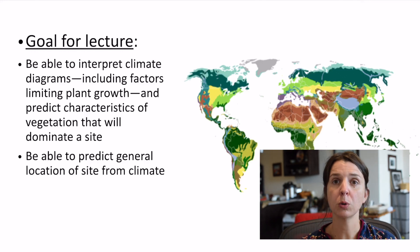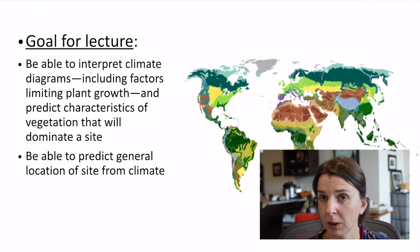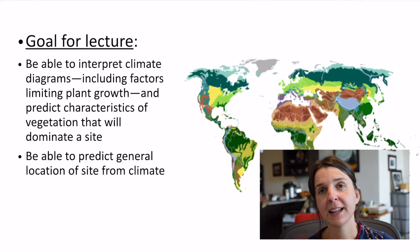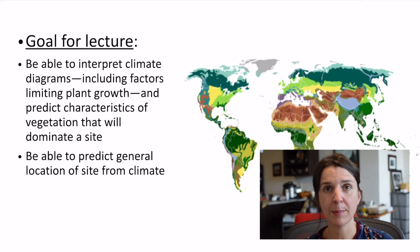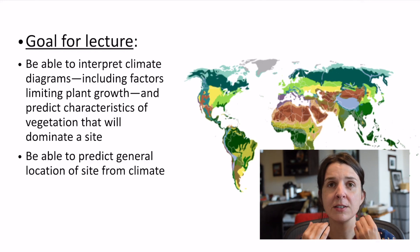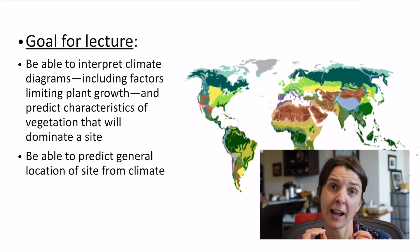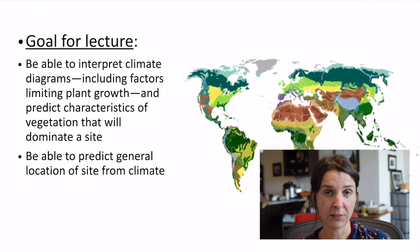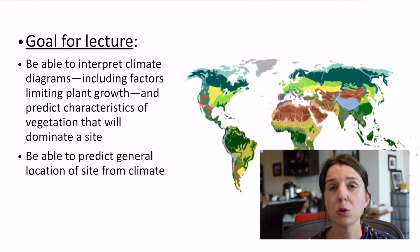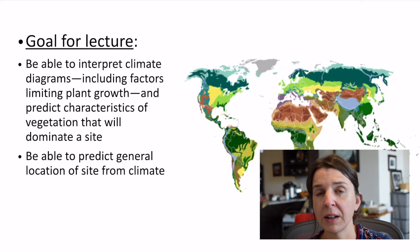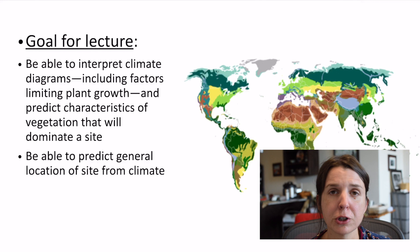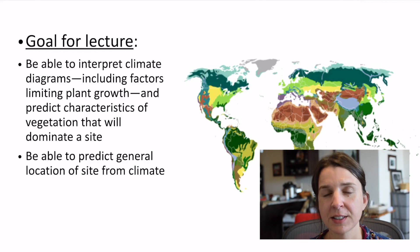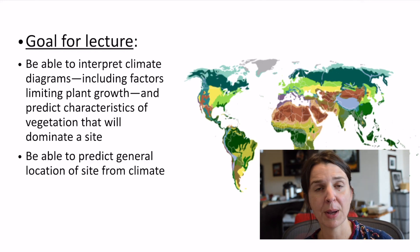we are going to go over climate diagrams, and afterwards you should be able to look at a climate diagram and figure out what factors actually limit plant growth at a given site. And you should be able to predict what the major features of the vegetation at a given site will be, given the climate.